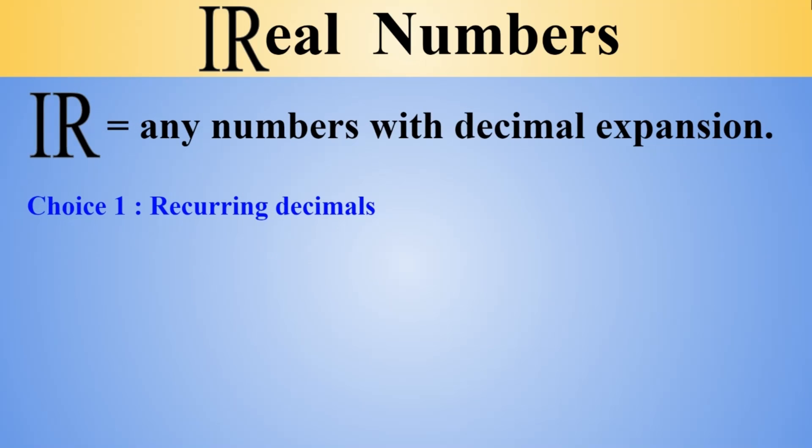For example, when I write out a number with a decimal option, the first choice is that I have some repetition. For example, if I take 1 by 6, this is 0.16666 and this 6 goes on forever and ever. You may be more familiar with writing this with a bar over it.